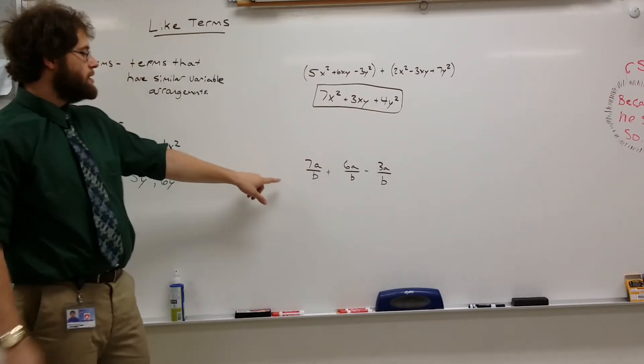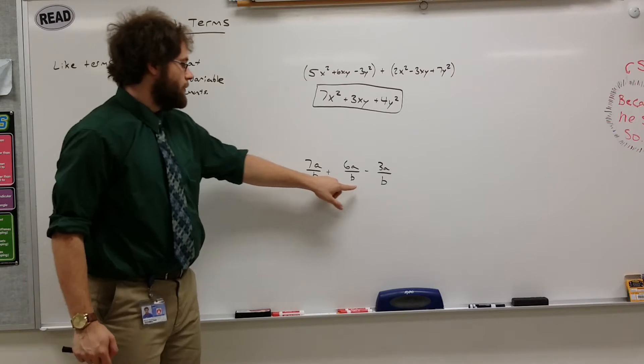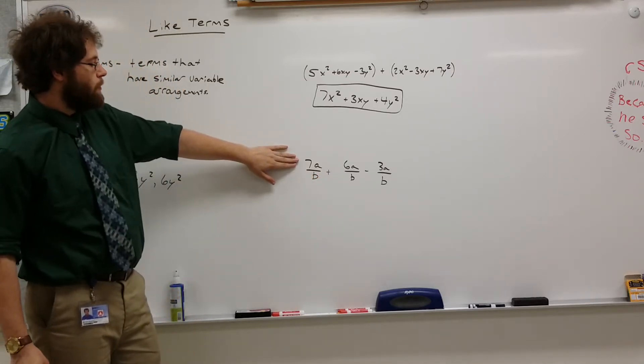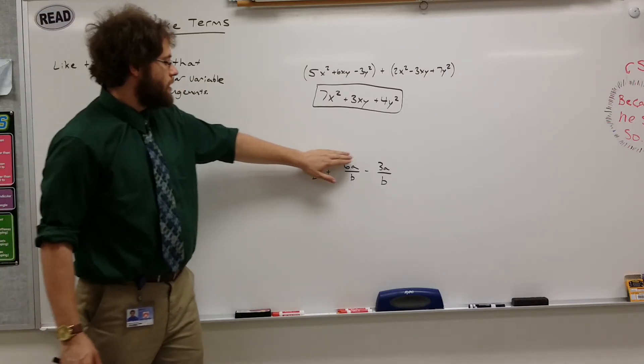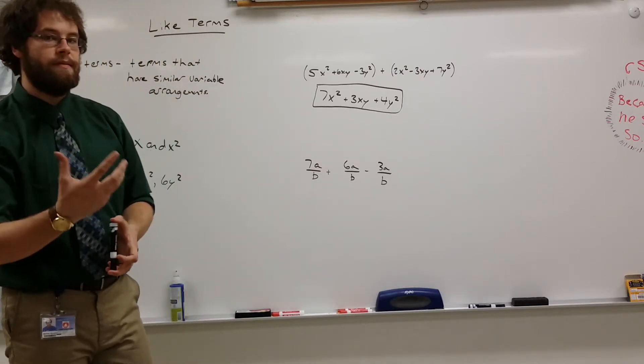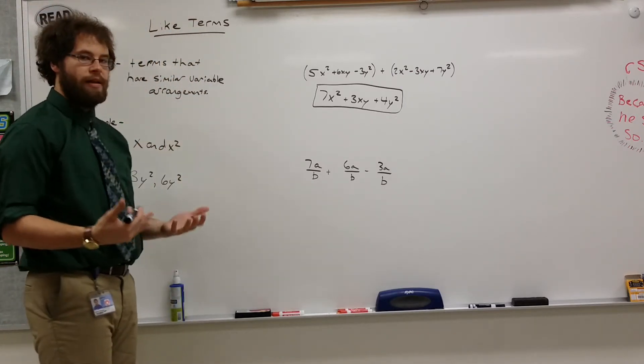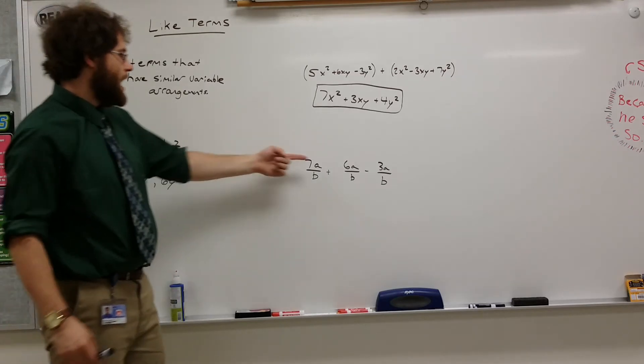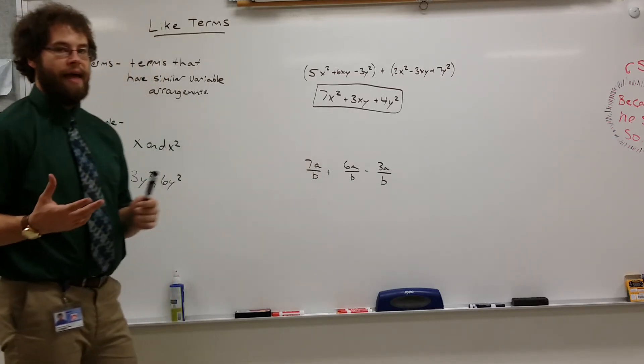Down here is another example. As you can see, these all look similar. We have 7a over b, 6a over b, and 3a over b. All those things are like terms because they have a similar arrangement of variables. They have an a over a b. So we can add those things.